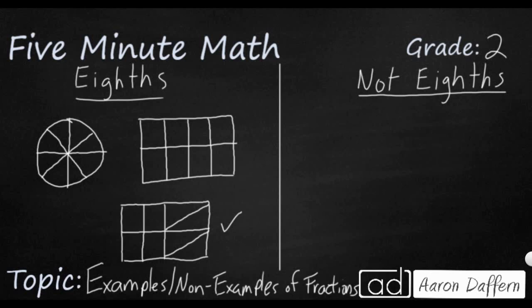Not eighths is when you don't have equal pieces. So if I were to try to do this, and if I were to draw some lines like this, that would not work because those are not equal pieces. So always make sure that your pieces are equal. Like if I were to try to do this and split it like this, that's not going to work because they're not equal pieces. And that's a good example of eighths and not eighths.